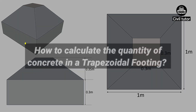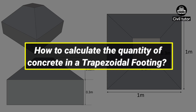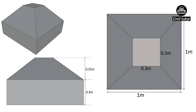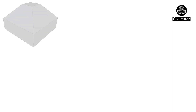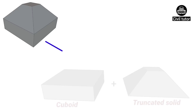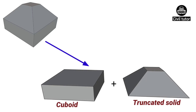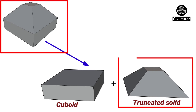Now, coming to the second question: how to calculate the quantity of concrete in a trapezoidal footing. For illustration, let's consider a trapezoidal footing with the given dimensions in which we need to calculate the volume of concrete. If you clearly visualize from this picture, a trapezoidal footing is made with the combination of a cuboid and a truncated solid. So to calculate the volume of the footing, we need to calculate the volume of each solid separately. That is, volume of footing = volume of truncated solid + volume of cuboid.